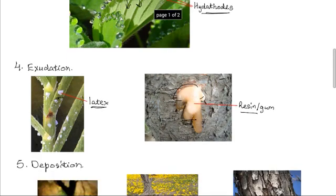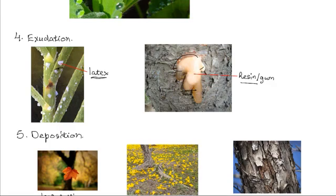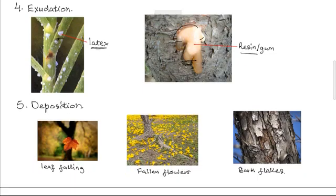Then the fifth method is known as deposition. This is a process whereby waste products are converted into non-toxic forms and then stored in plant parts that are later shed off. These plant parts include leaves. At a certain point in time, the older leaves that contain waste materials are shed from the plant. Flowers. Many plants do deposit unwanted materials in flowers that later fall off. And the bark, the outer part of the stem epidermis. The bark does flake off in bits. These bits that flake off contain unwanted materials that plants have deposited in these areas. And as they fall off, they carry with them the waste products.